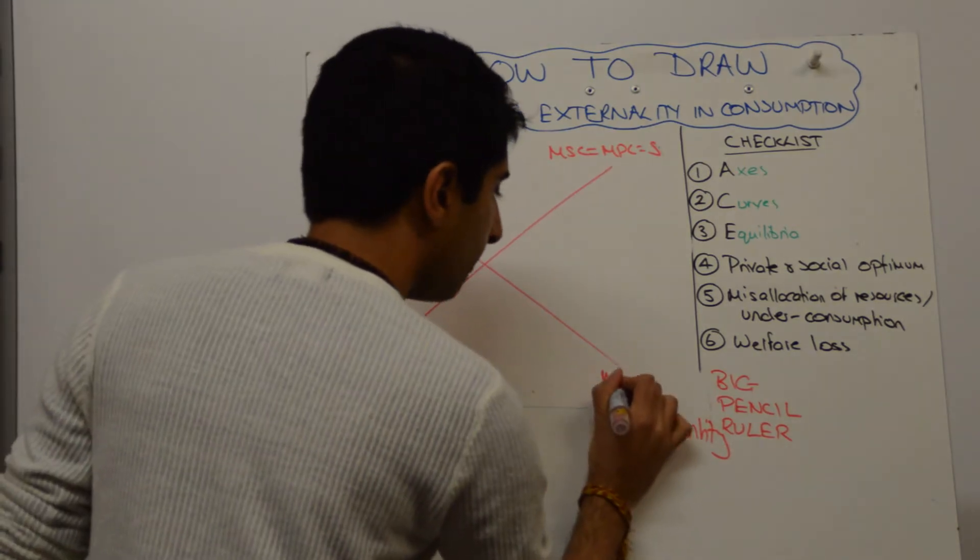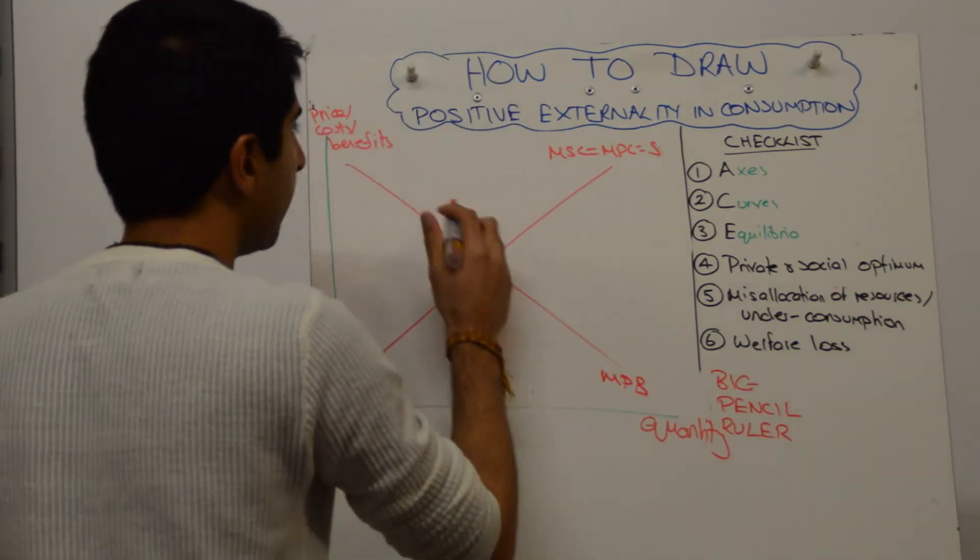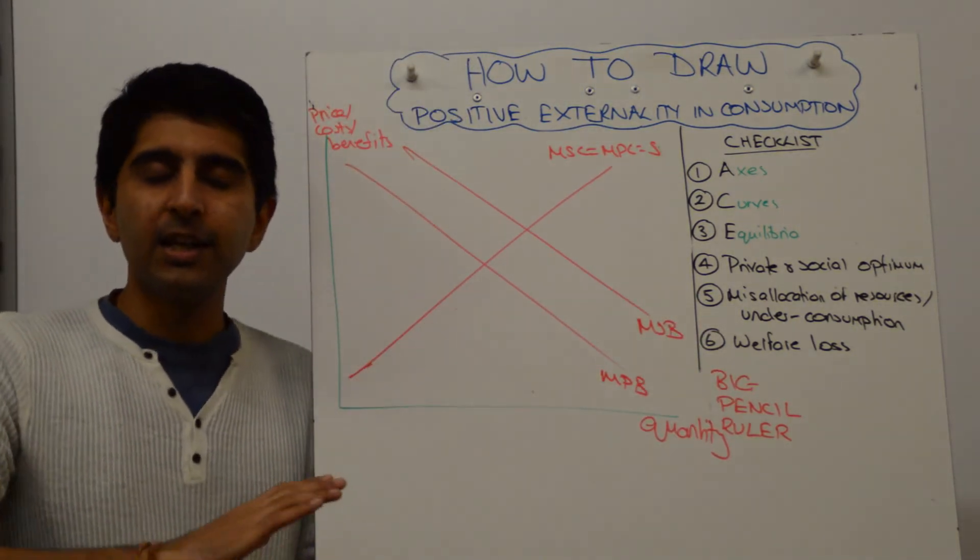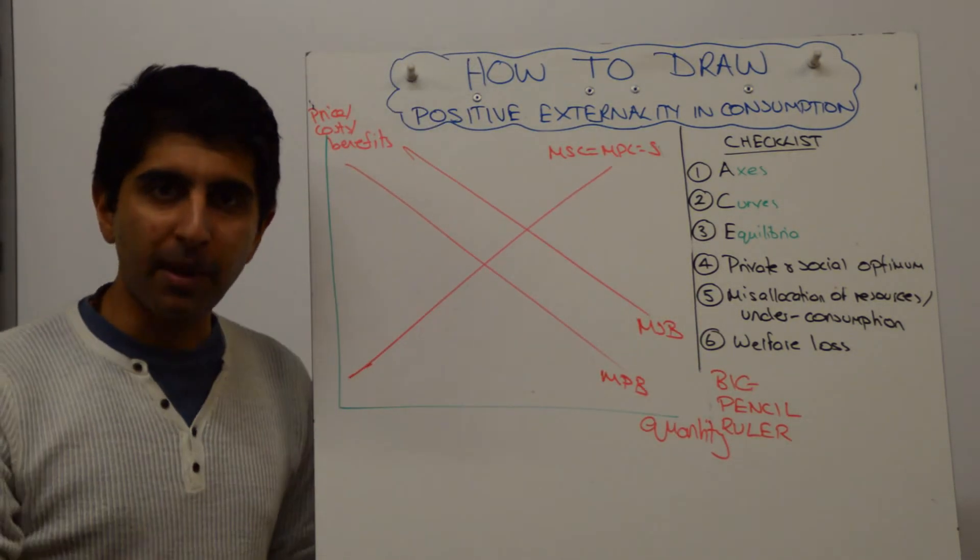That means we have a marginal private benefit curve here, and to the right of that we have a marginal social benefit curve. Once you've done this, guys, you are pretty much there. Then just get the basics of the diagram right.